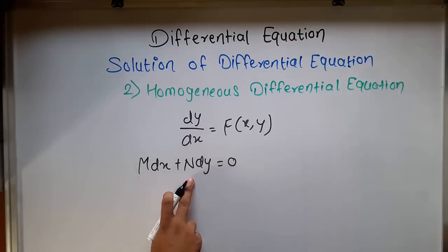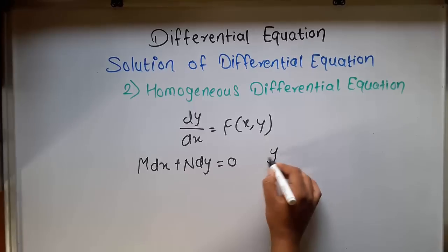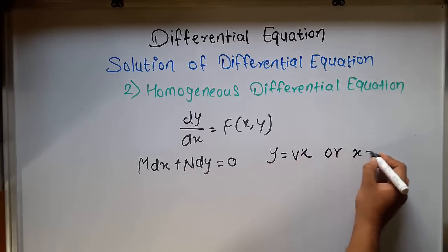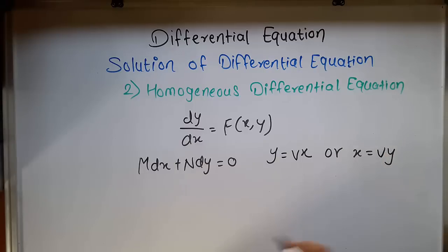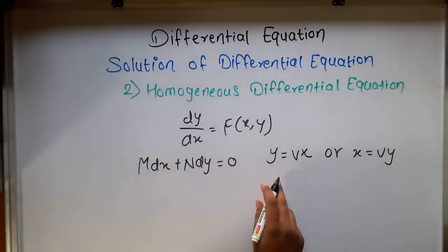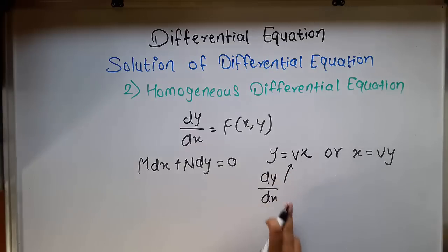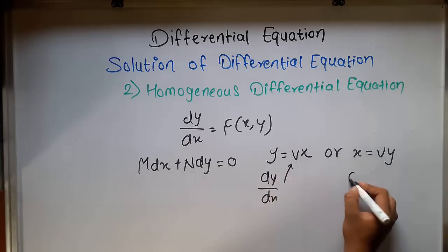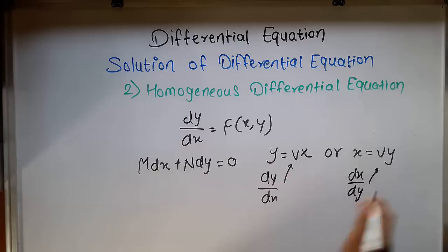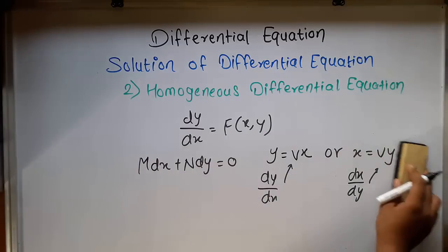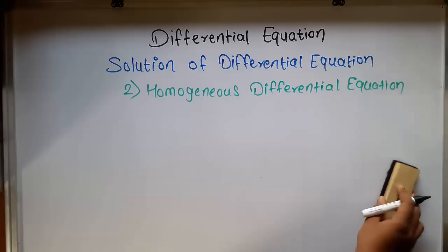When we get this type of homogeneous equation, we put y equal to vx, or x equal to vy — both ways work. If the equation is in terms of dy/dx, we put y equal to vx. If it is in terms of dx/dy, we put x equal to vy. This converts it into variable separable form, and then we solve using the variable separable method. I will show you with the help of an example.